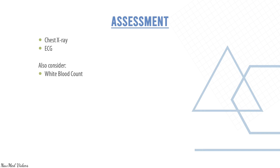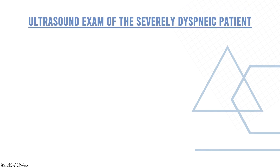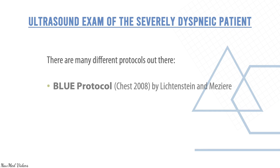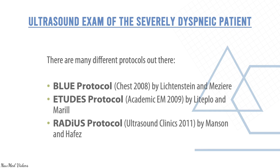Also consider white cell count, hemoglobin, renal function, liver function, cardiac enzymes, arterial blood gases, BNP, and D-dimer. Ultrasound may be required for the severely dyspneic patient. There are many protocols, including the BLUE protocol, ÉTUDE protocol, and RADIUS protocol.